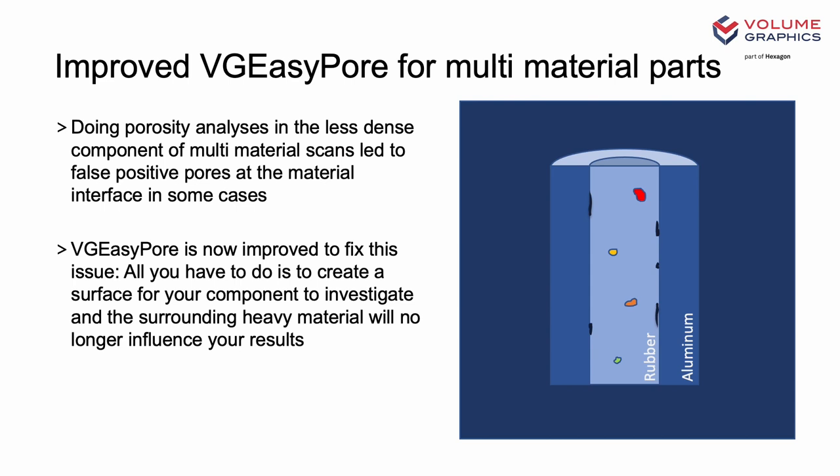Finally, using VG EasyPore on multi-material parts historically can be a little challenging under certain circumstances. If we were looking for porosity within a less-dense component of a multi-material dataset, sometimes we would end up with false positives in the areas where the materials interface each other. So we've taken a closer look to try and fix this issue. Now, provided the less-dense material has a surface already defined, we will no longer get the false positives at these interface areas. Just run VG EasyPore as normal.